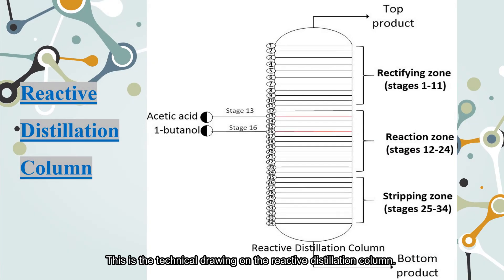This is the technical drawing on the reactive distillation column. As you can see, there are 34 stages in the distillation column. Stages 1 until 11 are the rectifying zone, stages 12 until 24 are reaction zone, and the stripping zone is from stages 25 until 34.